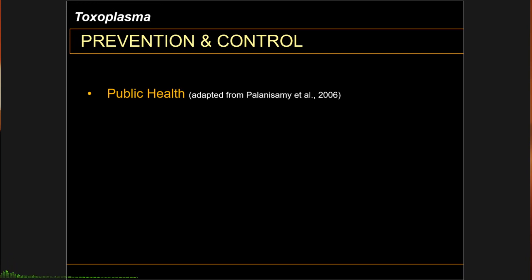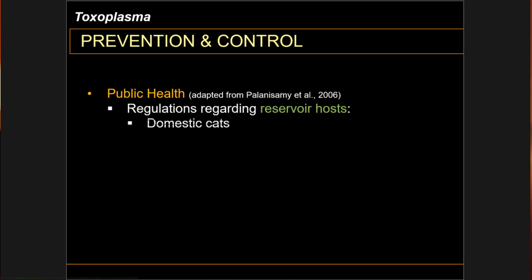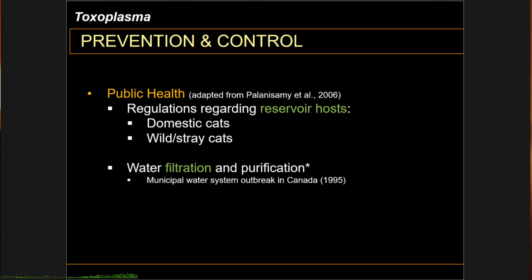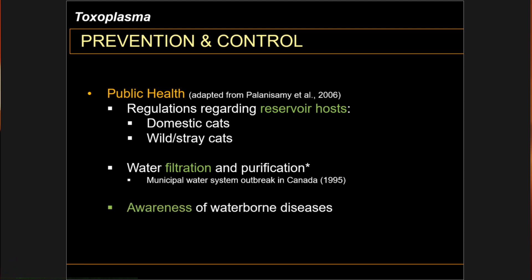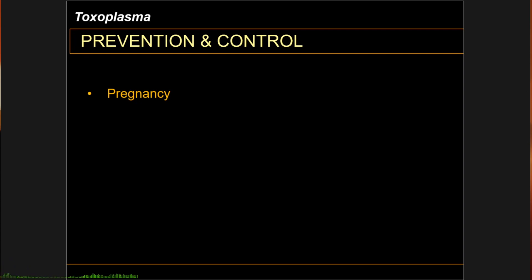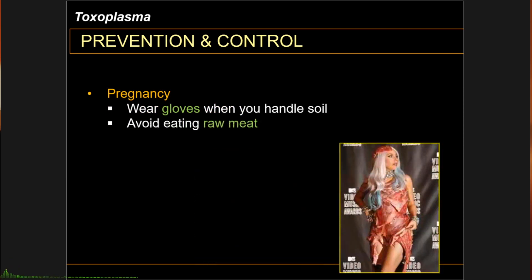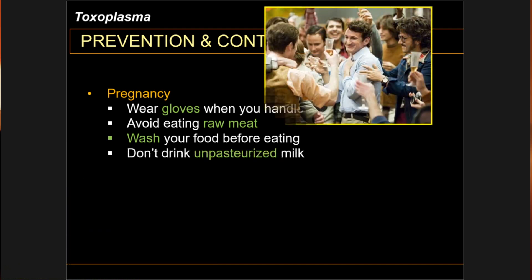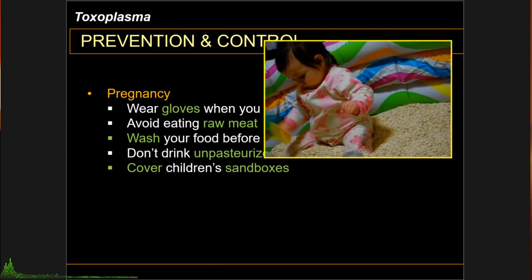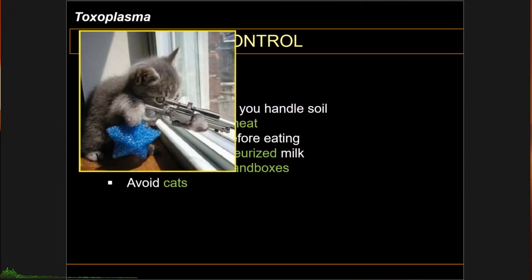Due to the worldwide distribution of toxoplasmosis, public health strategies have been developed. Regulations regarding reservoir hosts, including domestic and wild or stray cats, have been defined in some countries. Similar to the other coccidians, sanitary policies on municipal water systems are also implemented. People should also be aware that toxoplasmosis can be a waterborne disease. As far as pregnant women are concerned, here are a few Toxoplasma prevention tips: wear gloves when you handle the soil, avoid eating raw meat, wash your food before eating, don't drink unpasteurized milk, cover your children's sandboxes especially when there are cats around, and as much as possible when you are pregnant, try to avoid cats.